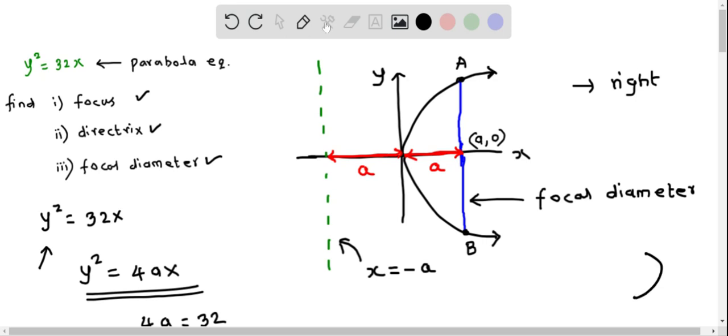This is the focus—it is a units from the vertex, which means if you replace a by 8, the focus is (8, 0). Therefore, the coordinate of the focus is (8, 0).